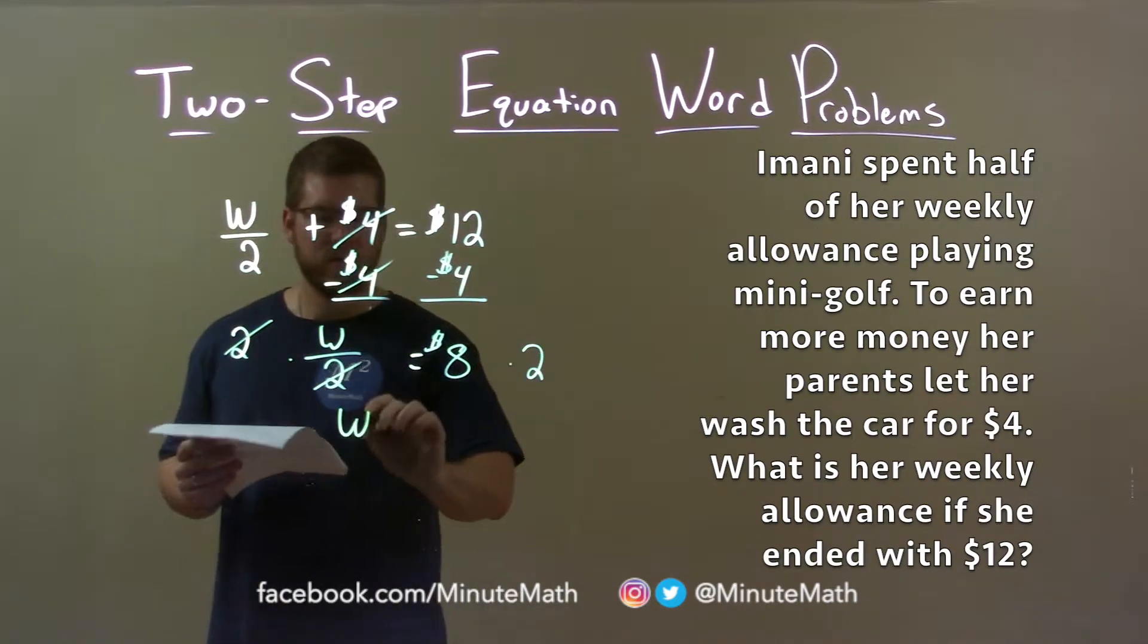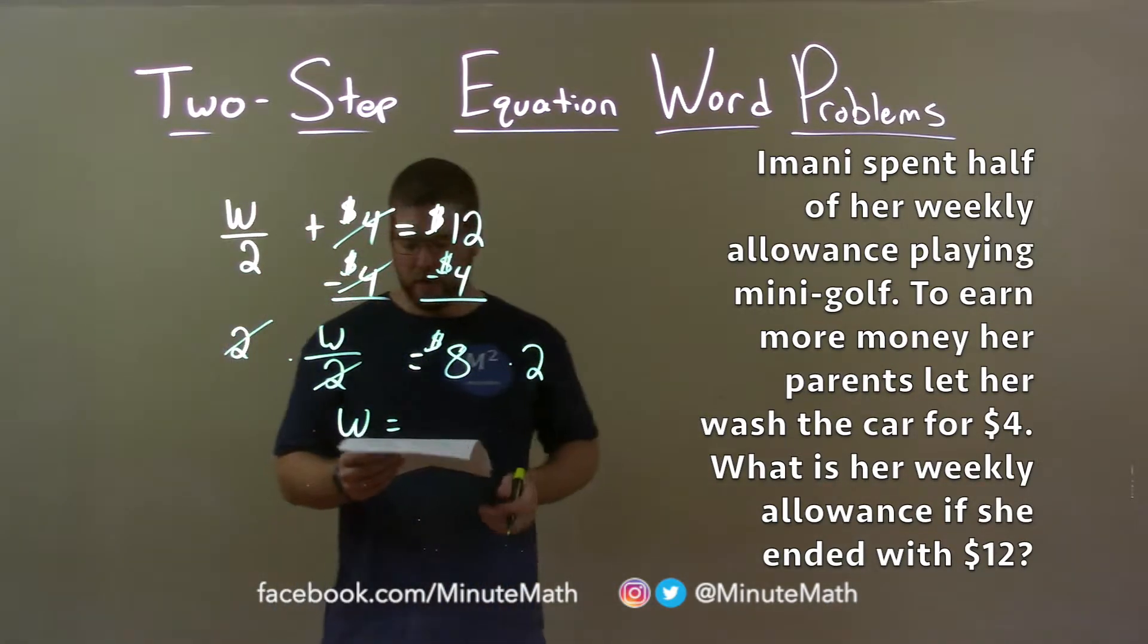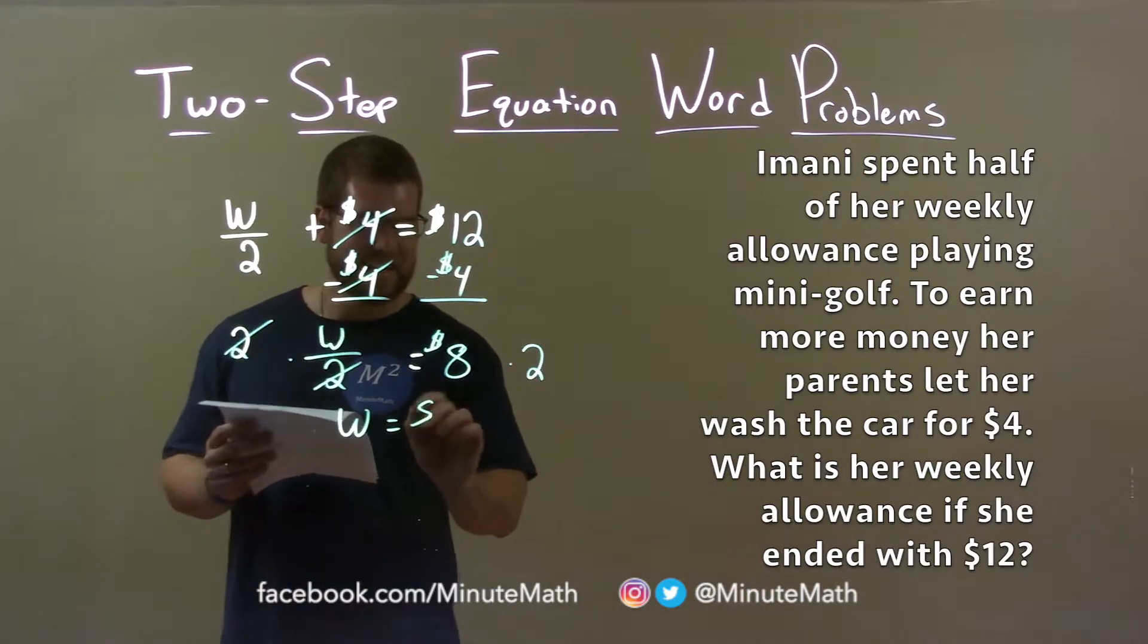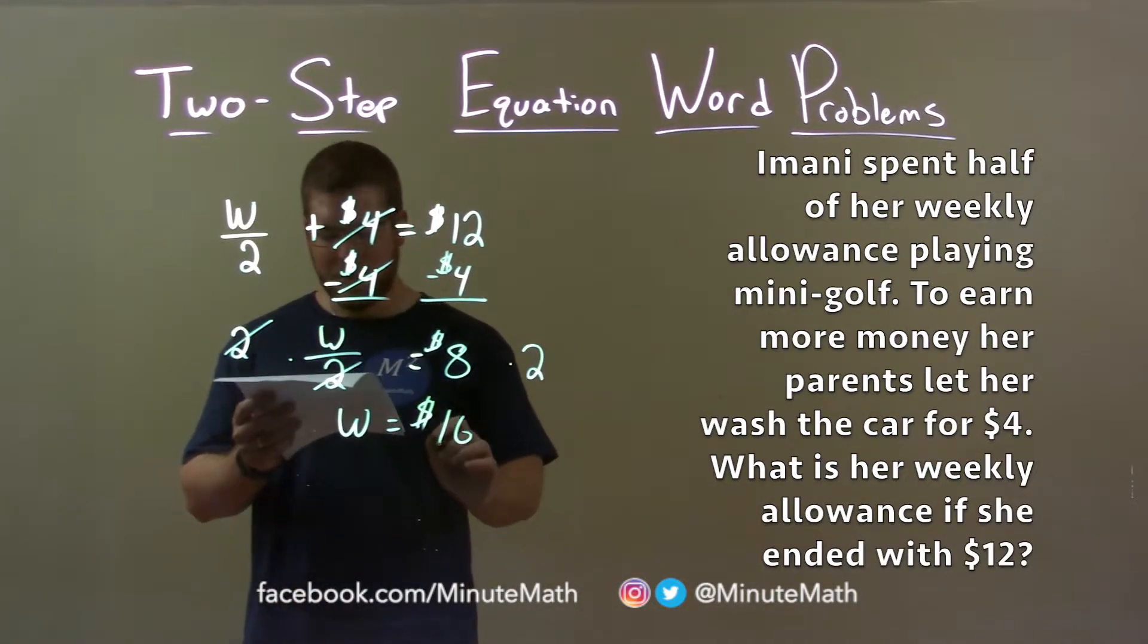Twos cancel, give me W by itself. And eight dollars times two is sixteen dollars, and that is her weekly allowance.